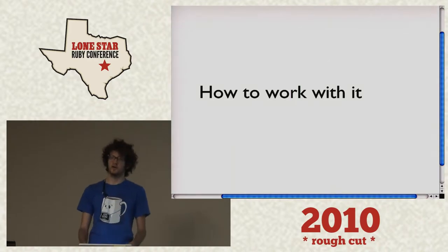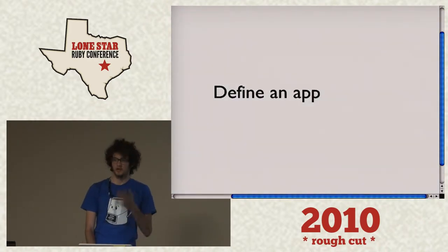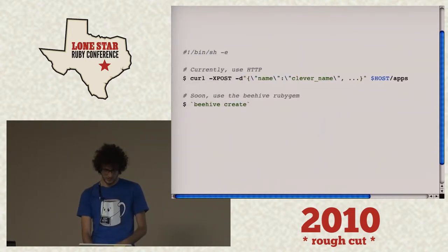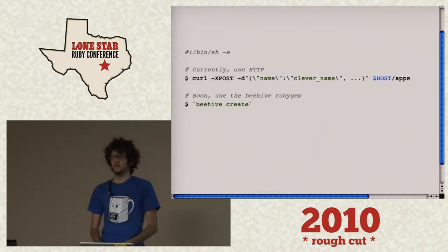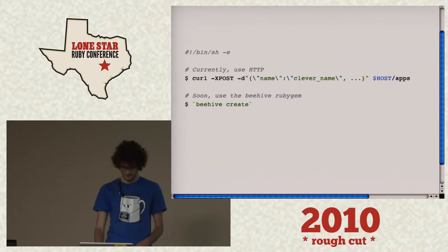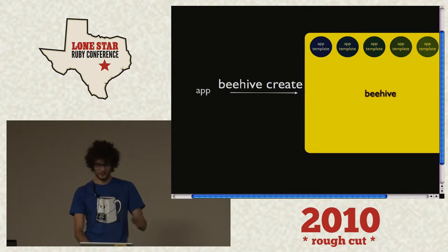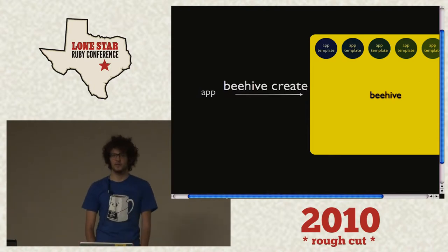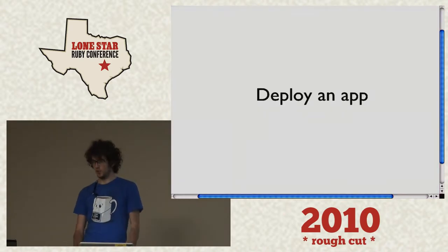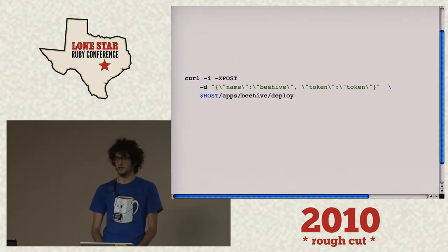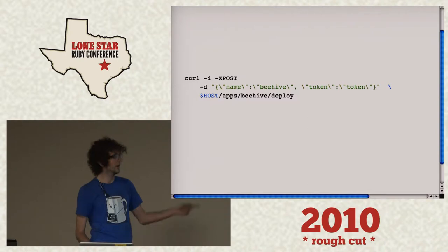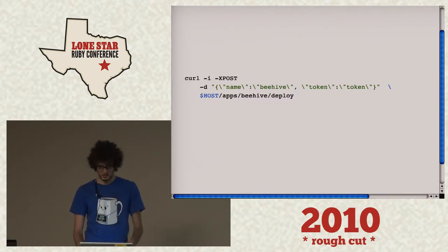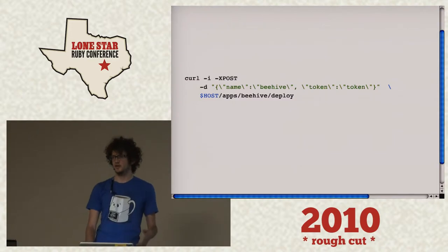So how do we work with Beehive? First you have to define an app. The way you do that is you use a curl request — or soon the Beehive gem — to create an application. That basically takes your application and puts it into Beehive, and then you're set. So how do you deploy an application? Use either a git post-commit hook, which is what we use at AT&T Interactive, or you just do a curl request and hit Beehive with it.